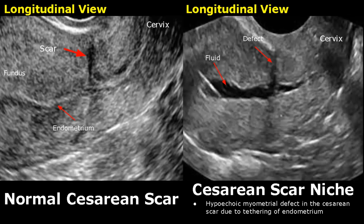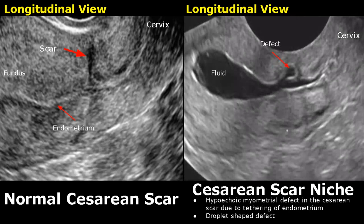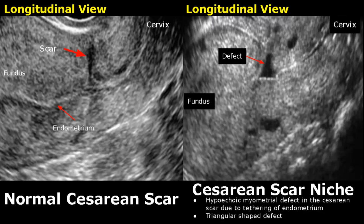In this image, there is a large accumulation of endometrial fluid. This defect has a teardrop shape. Triangular shaped defects are common as well. We can see a proper triangular shaped defect here.